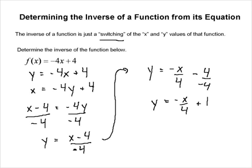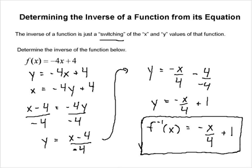Now we switch back to inverse notation. Since our function was originally called f(x), the inverse is written using f⁻¹(x) notation. So f⁻¹(x) = -x/4 + 1. That is the inverse of our function.